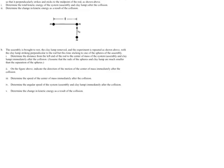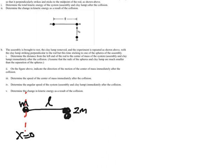In part b, the assembly is brought to rest, the clay lump is removed, and the experiment is repeated as shown. First we want to determine the distance from the left end of the rod to the center of mass immediately after the collision. I'm going to draw that picture: we have mass M, a distance L away, two masses M stuck together, so 2M, and then mass M on the other end. We set the left end as x = 0.